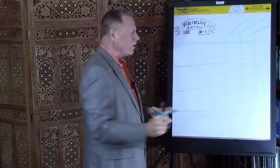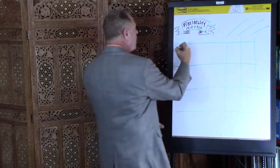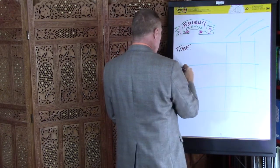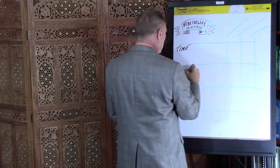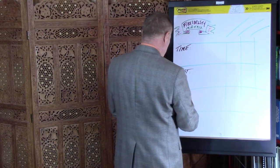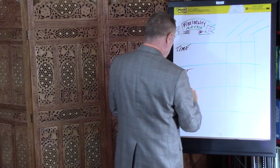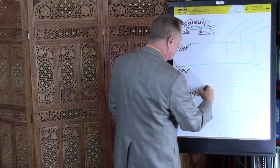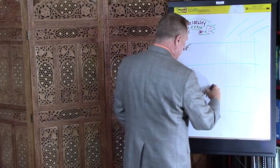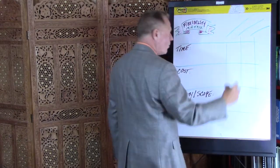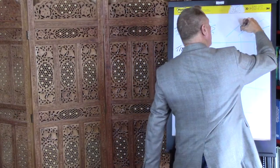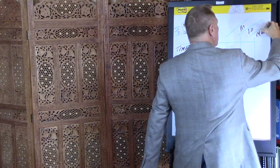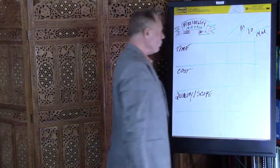A flexibility matrix always includes time, cost, and quality. Quality is sometimes viewed as scope. We know by default one has to be high, one low, and the third one will be moderate.